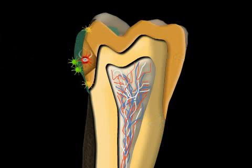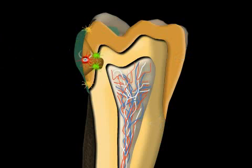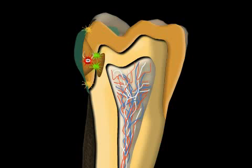There, the bacteria can feed themselves from the proteins contained in the dentin, and the disease thus develops its own momentum. From that moment on, the dentist must remove the caries with a drill.